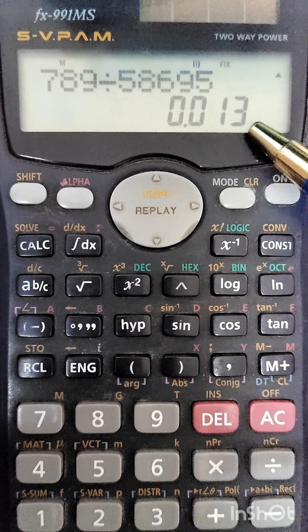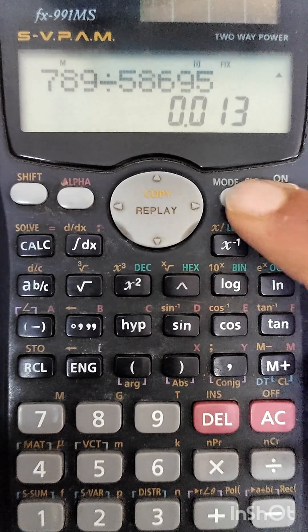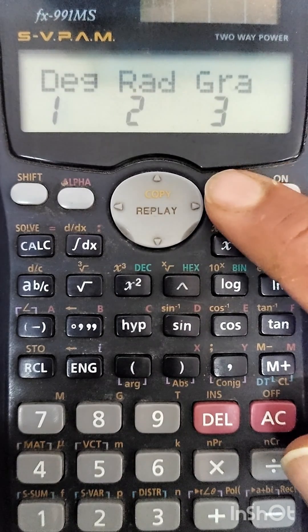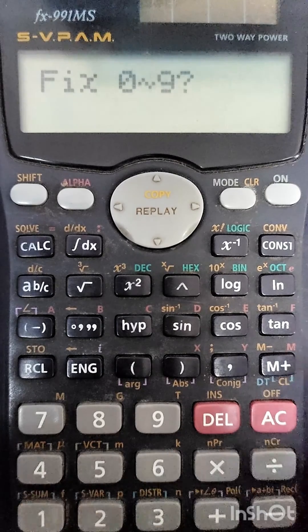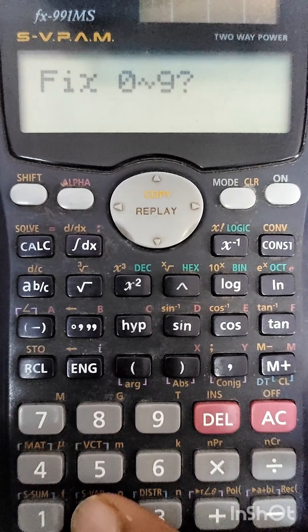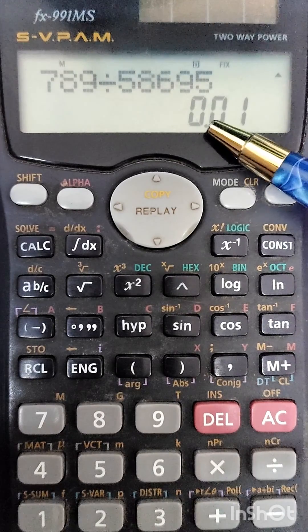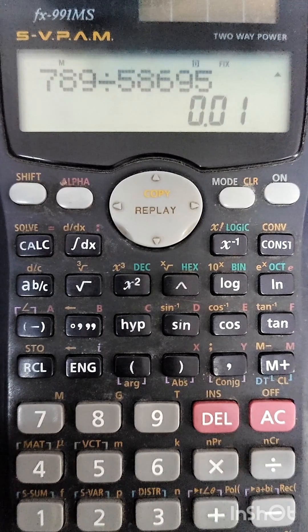In a similar fashion, we can also fix it to two. So again, I'm clicking the MODE button five times, then clicking one, and this time I'm clicking two. After clicking two, we have two numerical values after the decimal.